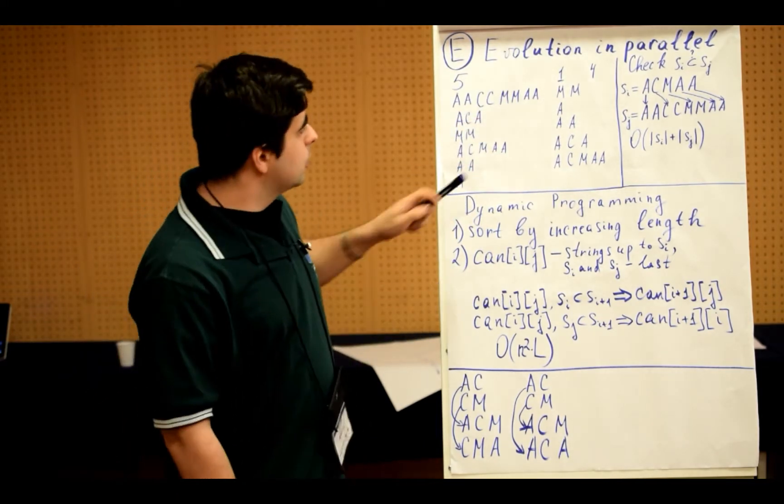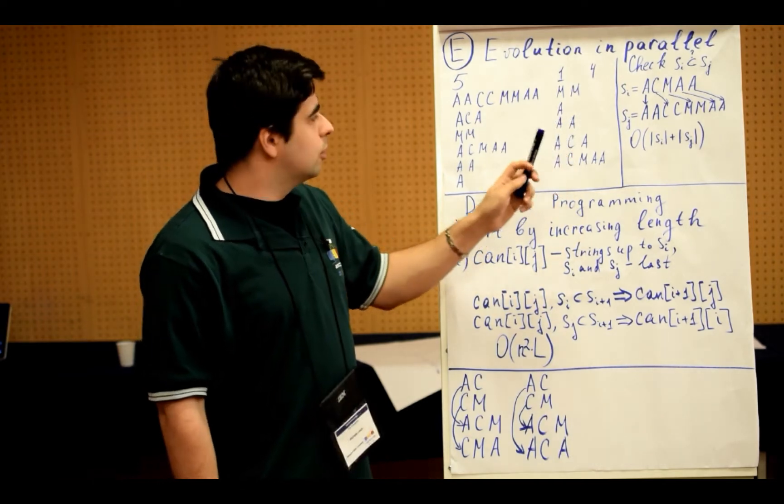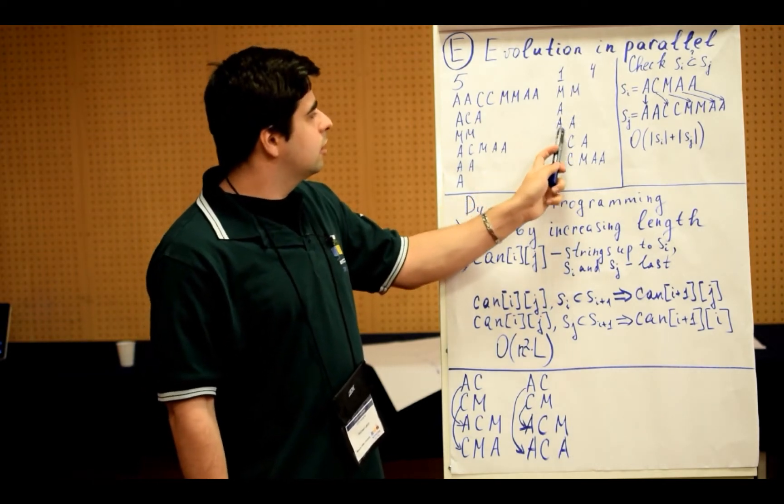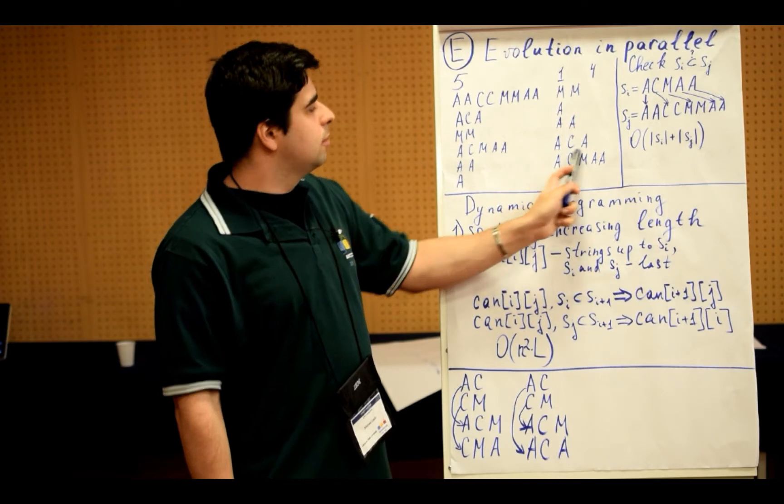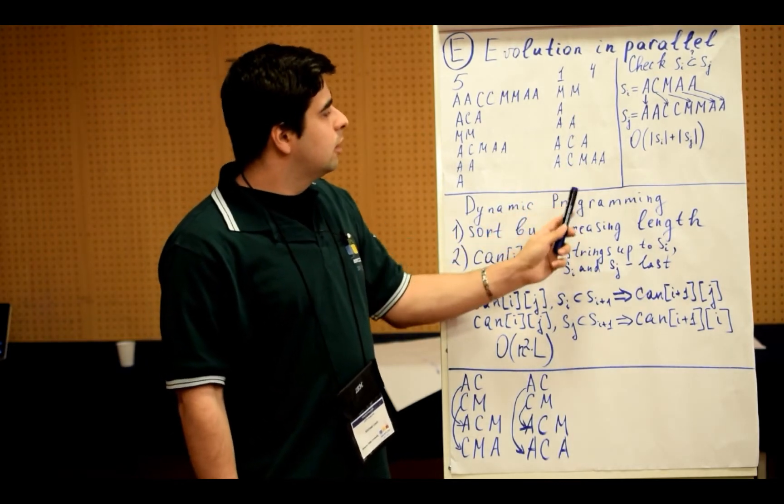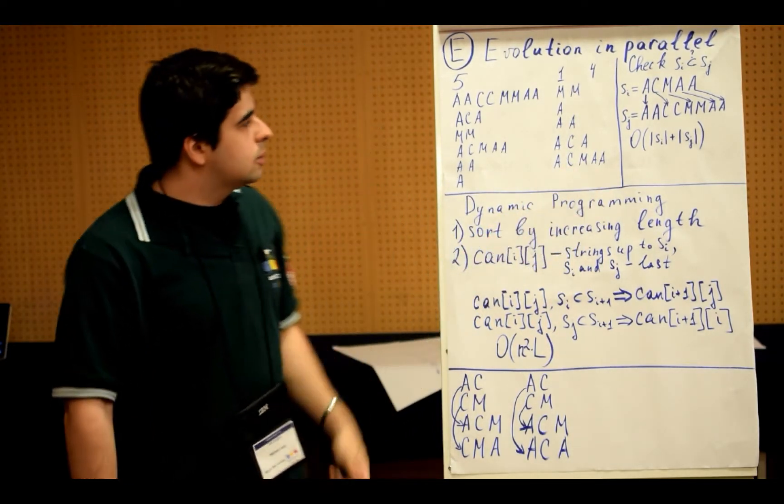So how does the evolution work? It works by inserting letters into the genetic code. So it started with A, then another A was added, and then a C was added in the middle, and then an M, and then another A was added. So this is how it works.